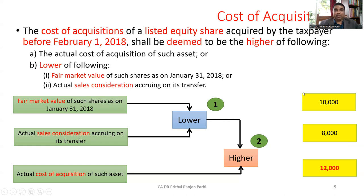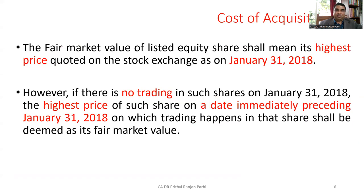For example, suppose the fair market value is 10,000 rupees and actual sales consideration is 8,000 rupees. We take the lower — that is 8,000 rupees. That 8,000 rupees is compared with the cost of acquisition, let us assume that is 12,000 rupees. In this comparison we take the higher figure, which is 12,000 rupees. So the cost of acquisition shall be deemed to be 12,000 rupees.